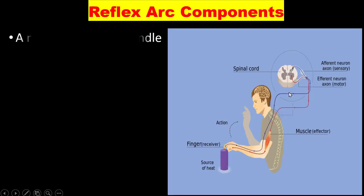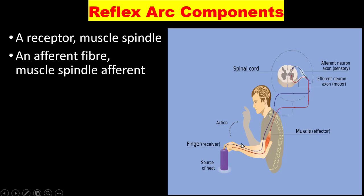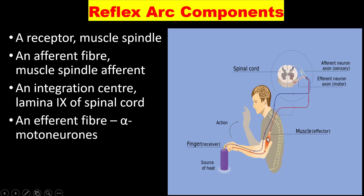The reflex arc components are: receptor — which is the muscle spindle; afferent fiber — muscle spindle afferents; integration center — lamina nine of the spinal cord; efferent fiber — the alpha motor neuron; and effector — the muscle.